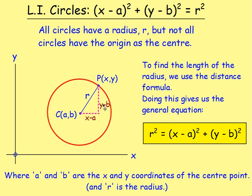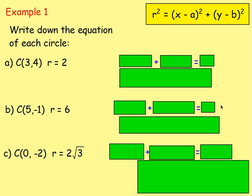Using the distance formula — or really just using Pythagoras — you get the general equation: r squared equals x minus a, all squared, plus y minus b, all squared. A is the x-coordinate of the centre, b is the y-coordinate of the centre, and r is your radius. That is the general equation.